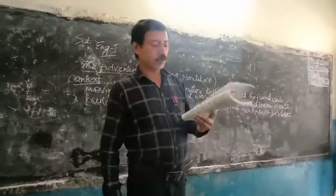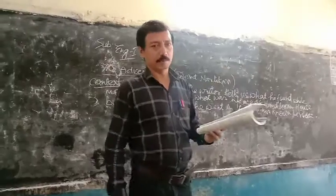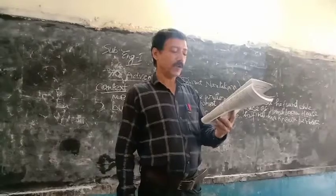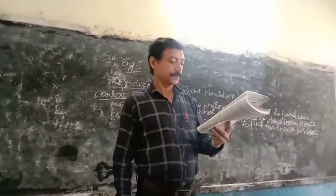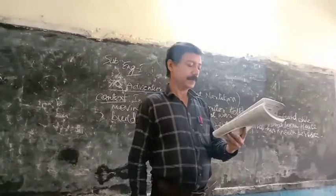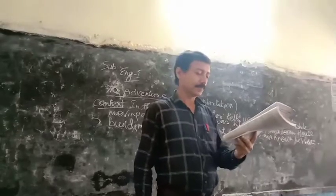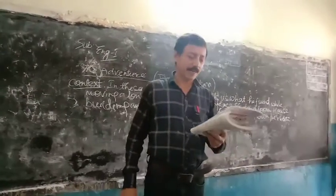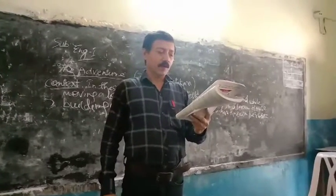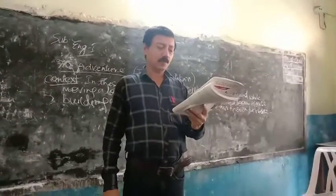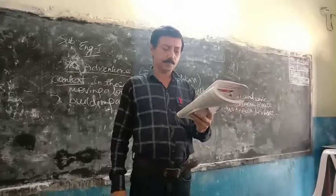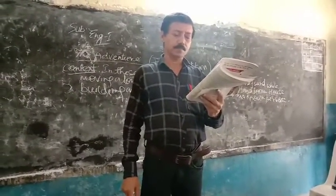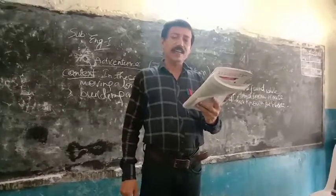Now students, see the explanation. The explanation of the above lines is given as I am telling you. In the line-by-line explanation, the writer says that while he was walking on the byroad, he found different types of various buildings.